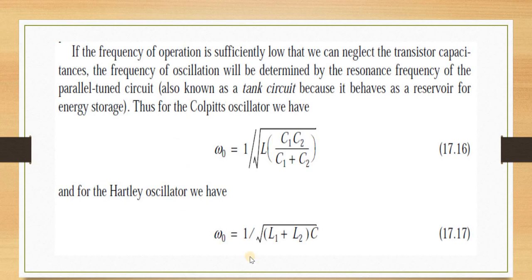For the Hartley oscillator, two inductors in series connected in parallel with a single capacitor: the equivalent inductance is L1+L2, so ω₀ = 1/√((L1+L2)·C). These are the two formulas to remember for solving problems. In terms of frequency: F = 1/(2π√(LC)).